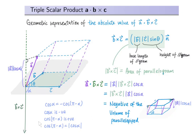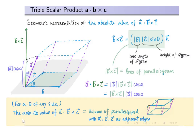As a remark, cosine(pi minus alpha) is positive, and the length of this line segment equals the length of A times the absolute value of cosine alpha. In general, the absolute value of A dot B cross C represents the volume of the parallelepiped with vectors A, B, and C as adjacent edges.